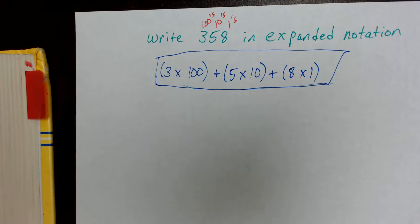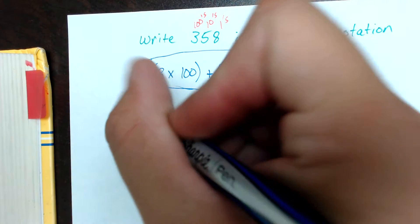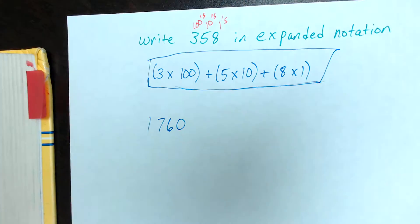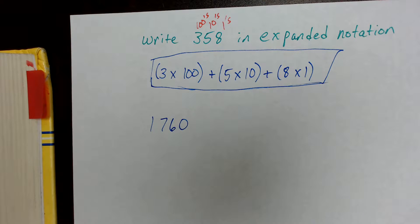So we'll do one more example and then we'll show how to go from expanded notation to traditional notation. Let's take the number, we'll do a big one, 1760. So we've got 1760.